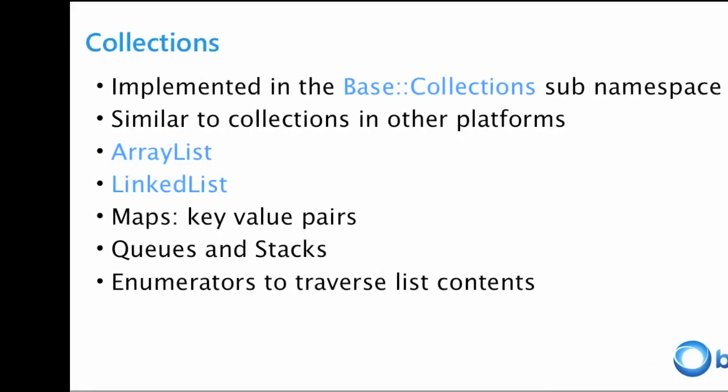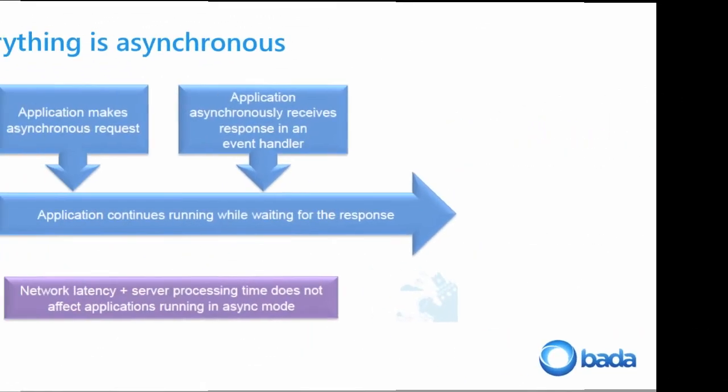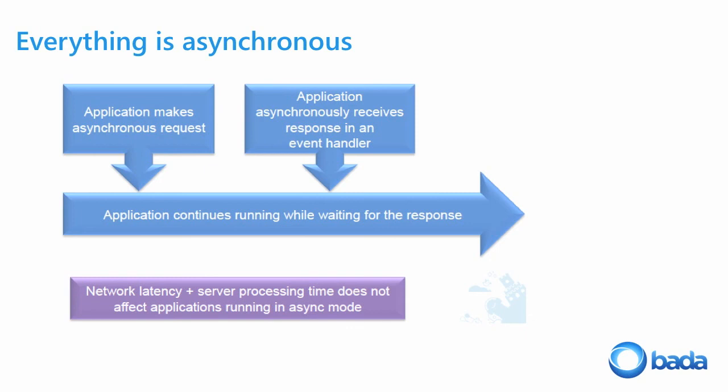Everything is asynchronous — and on a mobile phone, it has to be. You don't want your movie interrupted while waiting for the result of a sensor, or waiting for other things to happen. There are so many technologies on a mobile phone and so many things you're waiting for that you don't want to make the user wait for a result to return. So everything is asynchronous.